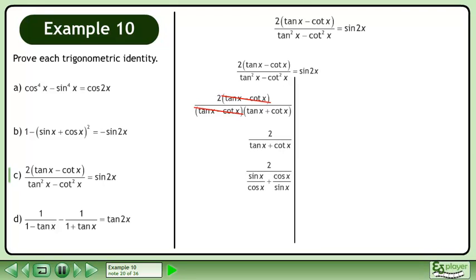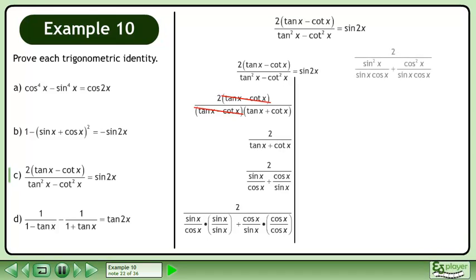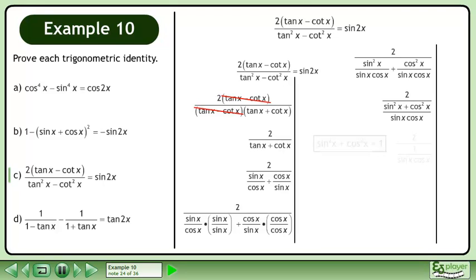Rewrite the denominator in terms of sin and cos. Get a common denominator. Simplify. Combine the fractions. Sin squared x plus cos squared x equals 1.